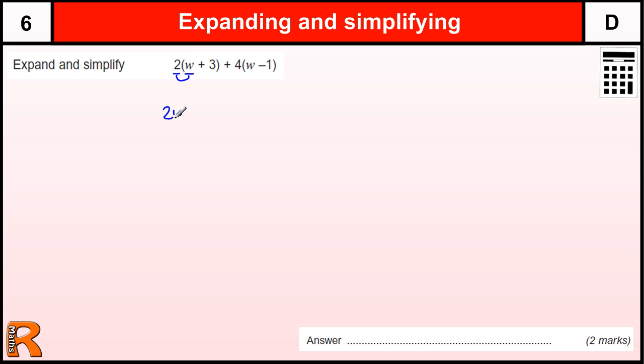So we do 2 times w is 2w, 2 times plus 3 is plus 6, then we're going to add 4 times w, so we're going to add 4w, and then we're going to do plus 4 times minus 1, which is minus 4.